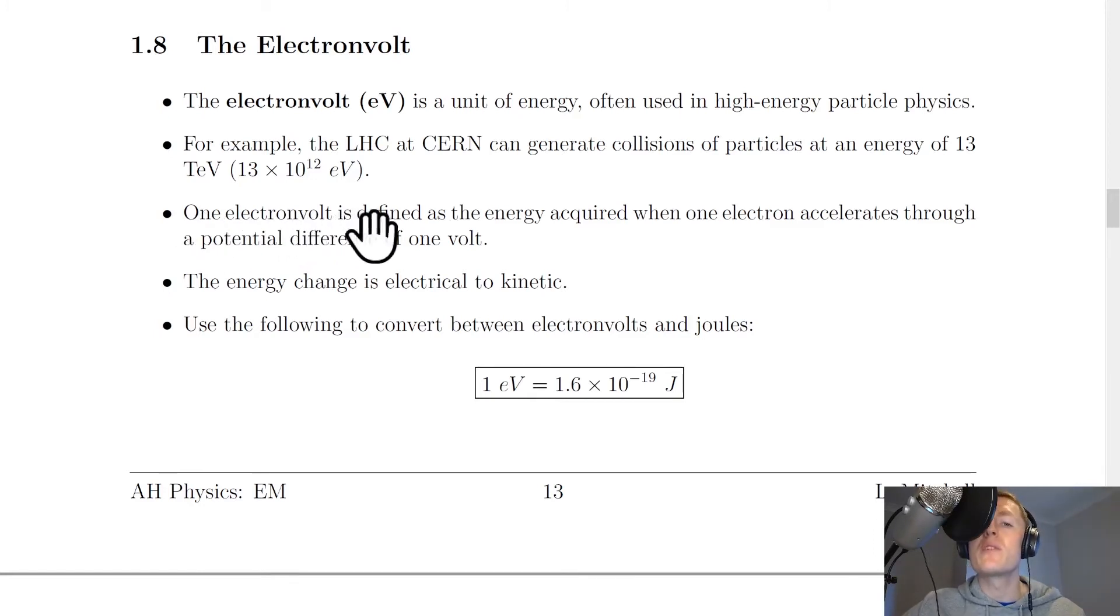One electron volt is defined as the energy acquired when one electron accelerates through a potential difference of one volt. The energy change is electrical to kinetic.